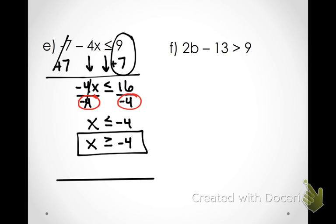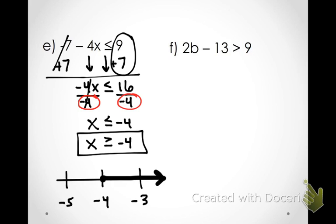For the graph, I'll draw three lines. Negative 4 in the middle, negative 5 to the left, negative 3 to the right. Is this an open or closed circle? Closed — because it has an equal sign. Which number is greater than or equal to negative 4? Negative 3 is correct. Make your arrow go toward negative 3.